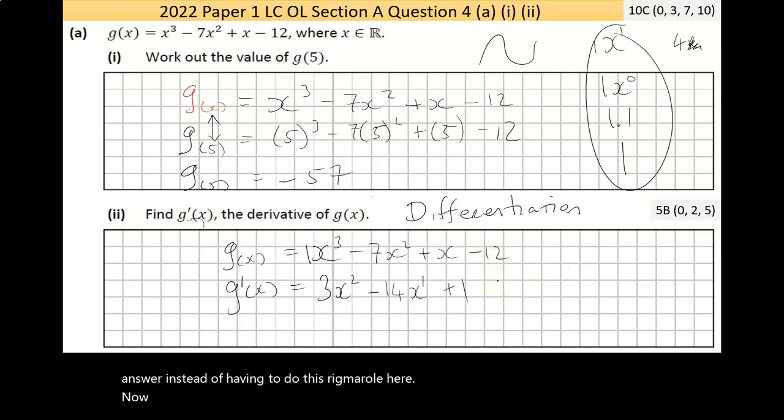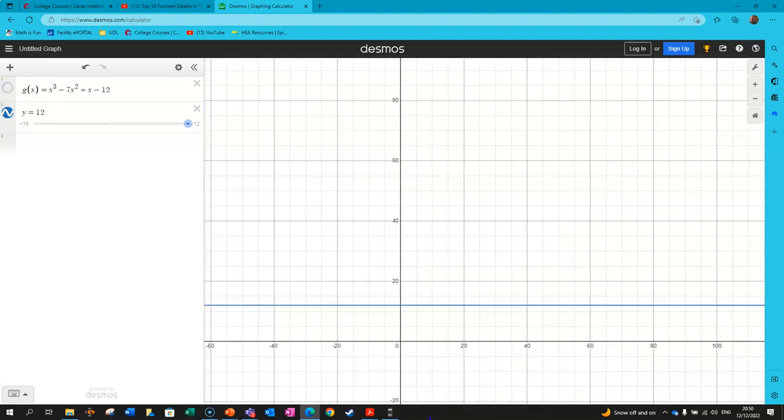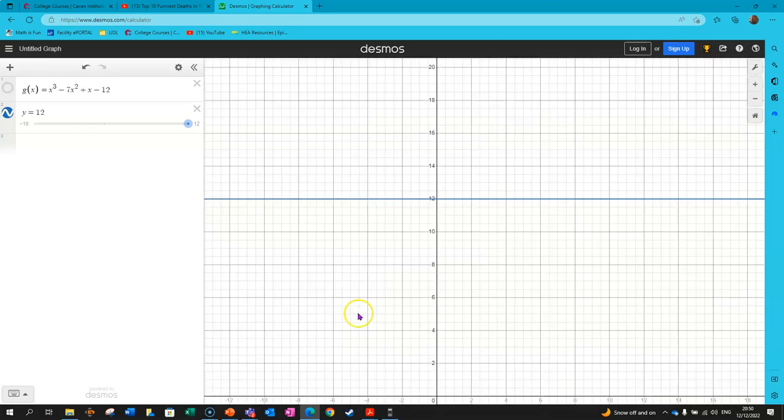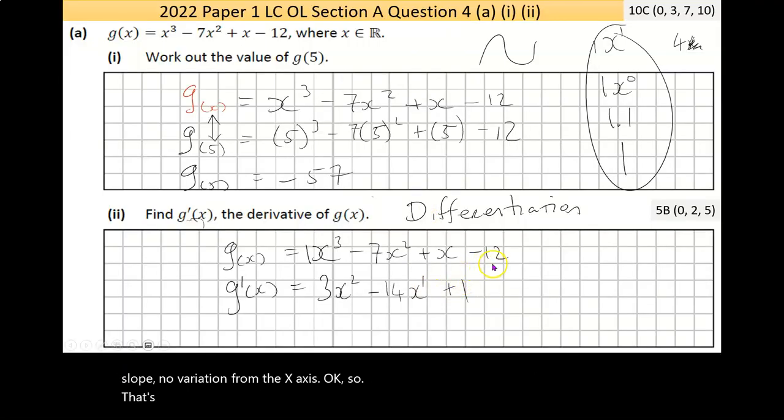Now the weird thing here is, if you differentiate an x to the power of one, this term here, we follow the same rule. Power by number in front, so one by one is one. And then step two says take one away from the power. One take away one is zero. Now one times x to the power of zero. X to the power of zero is one. So that's one times one. One times one is one. And we often learn off when we're doing differentiation is that whenever you're differentiating a variable on its own, the variable just drops away and you're left with one.